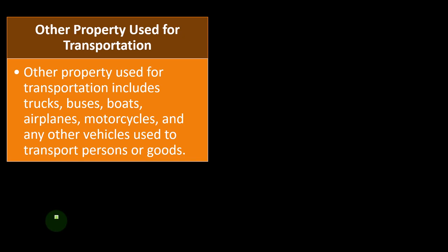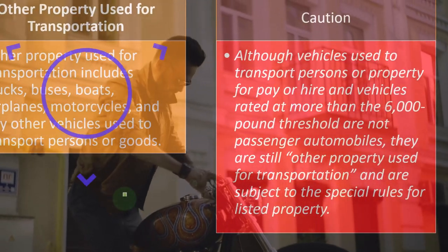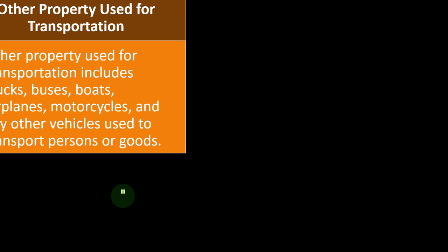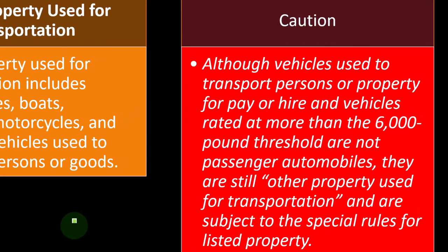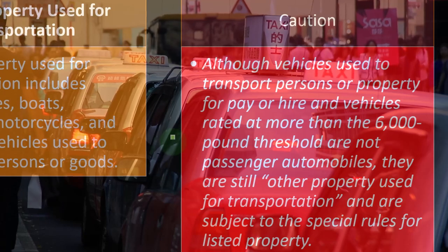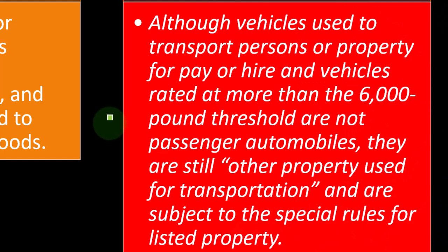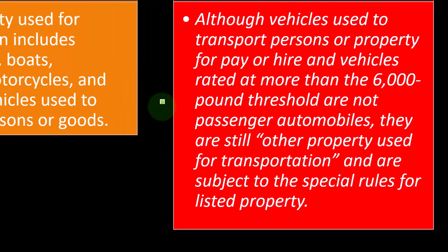Other property used for transportation includes trucks, buses, boats, airplanes, motorcycles, and any other vehicle used to transport persons or goods. Caution: although vehicles used to transport persons or property for pay or hire, and vehicles rated at more than the 6,000-pound threshold, are not passenger automobiles, they are still 'other property used for transportation' and are subject to the special rules for listed property. So you must still be careful — exceeding the 6,000-pound threshold doesn't remove the listed property classification entirely.